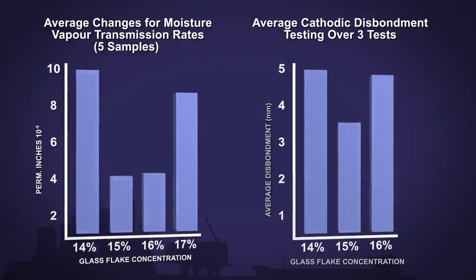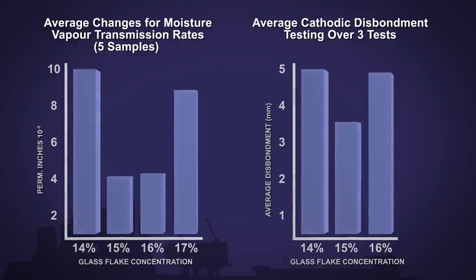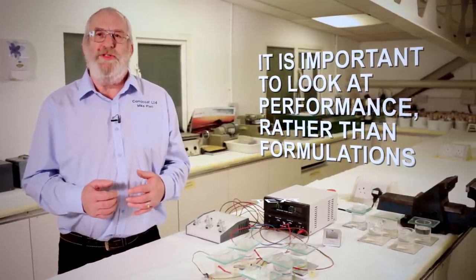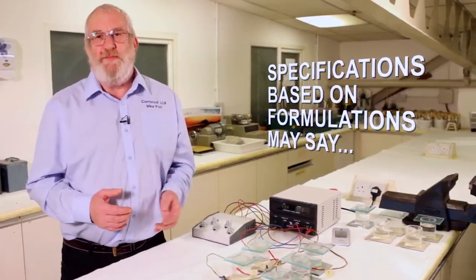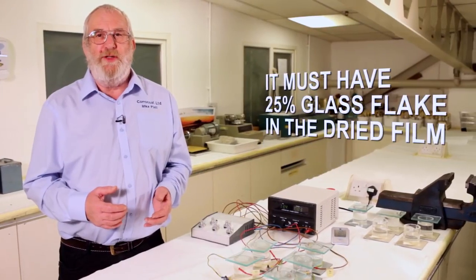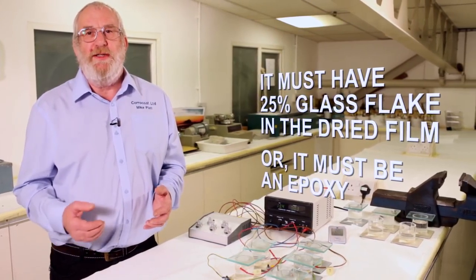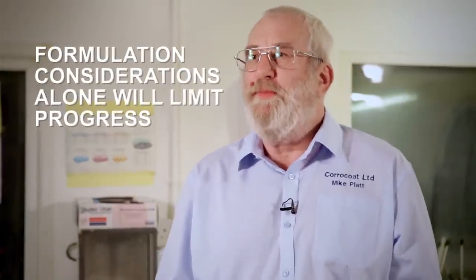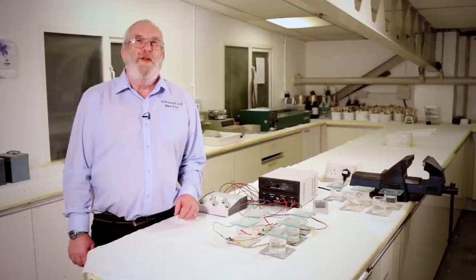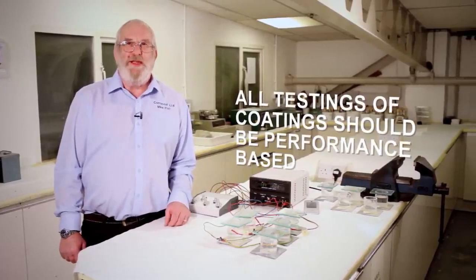This is a chart showing that cathodic disbondment and moisture vapor transmission are clearly related. When evaluating coatings, it is important to look at performance rather than formulation, such as it must have 25% glass flake in the dried film or it must be an epoxy. This limits the substitution of a coating which will perform better in that particular environment. All testing of coatings should be performance based.